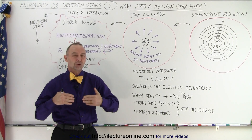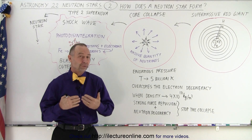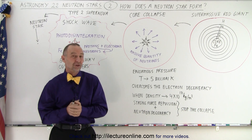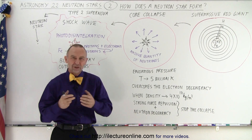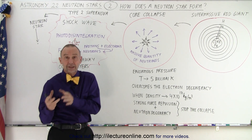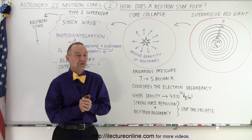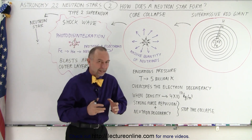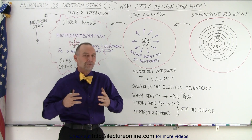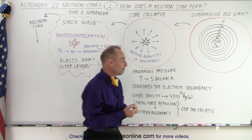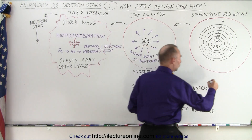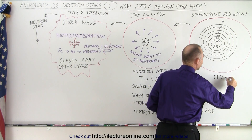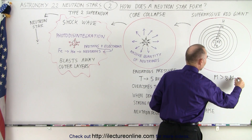How does a neutron star form? It's a very special type of star, but what is the process by which we end up with a neutron star? It starts out with a supermassive red giant, where the mass is larger than about eight times the mass of the sun.